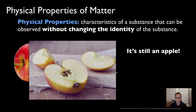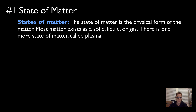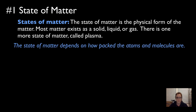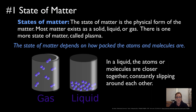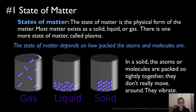The first physical property I'm going to go over is the states of matter, which you've probably already heard about. The state of matter is the physical form of matter. Most matter exists as solid, liquid, or gas, but there is a fourth one called plasma. The state of matter depends on how packed the atoms and molecules are. In a gas, atoms or molecules are very far apart, flying really fast with no definite shape. In a liquid, they're much closer together, constantly slipping around each other — no definite shape but a definite volume. In a solid, the atoms are tightly packed, they just vibrate, and solids have a definite shape.